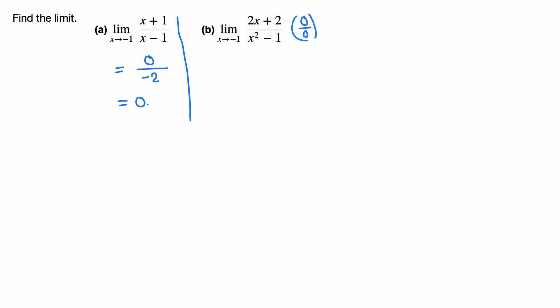Now somehow we need to get rid of this zero-making factor from the top and the bottom, so we need to simplify. We keep writing limit as x goes to negative 1 of...